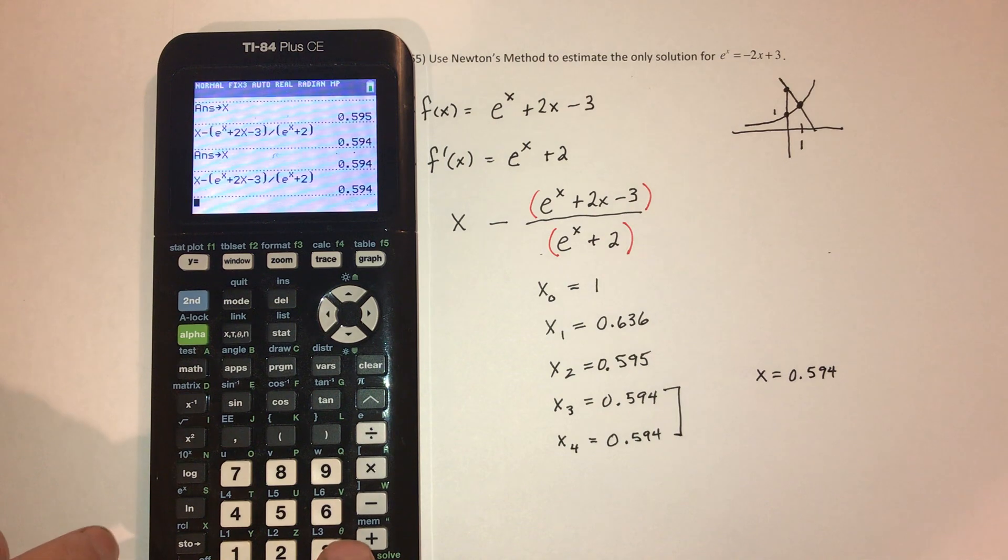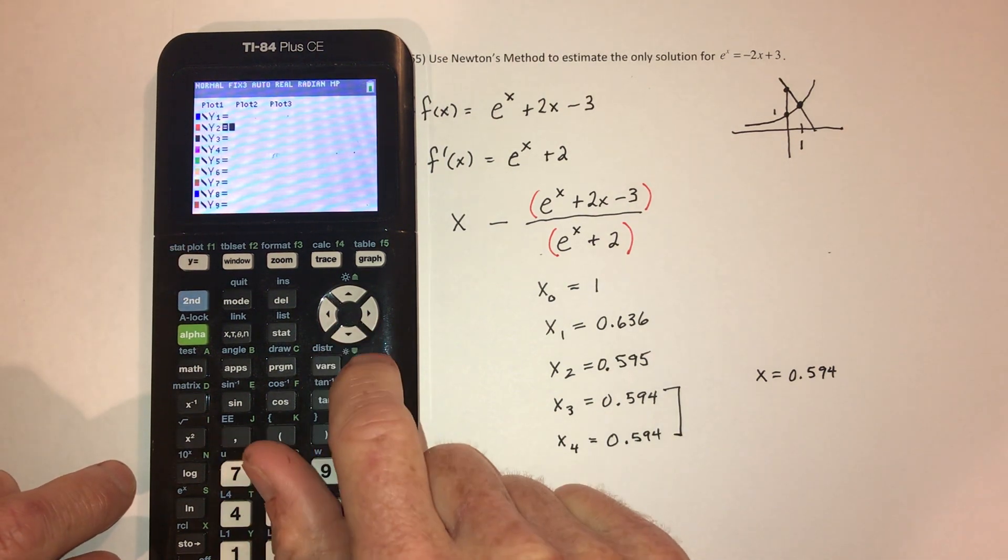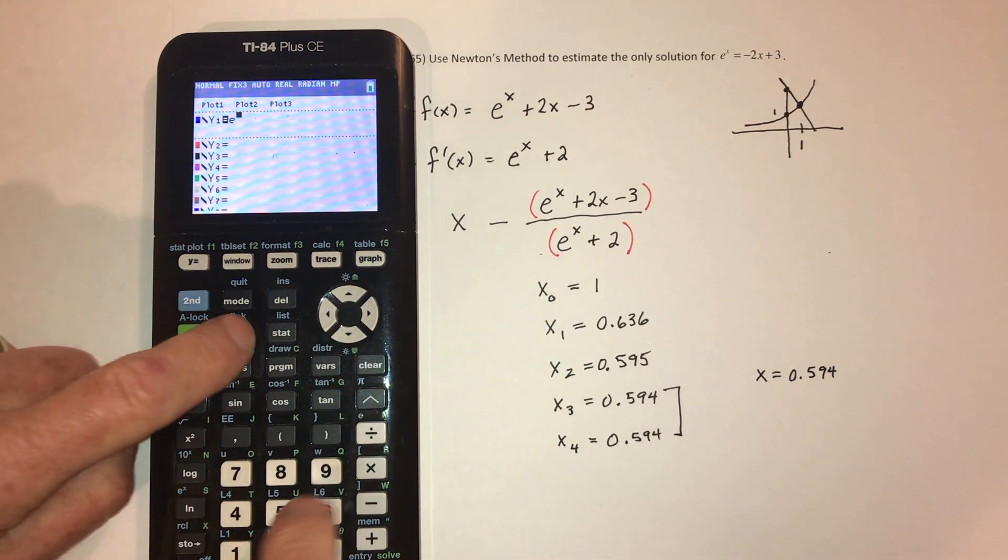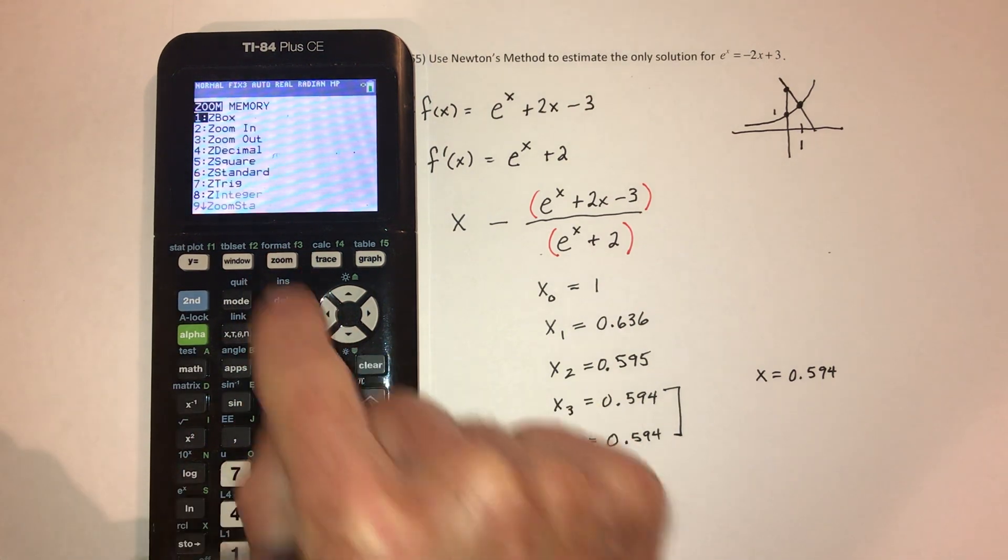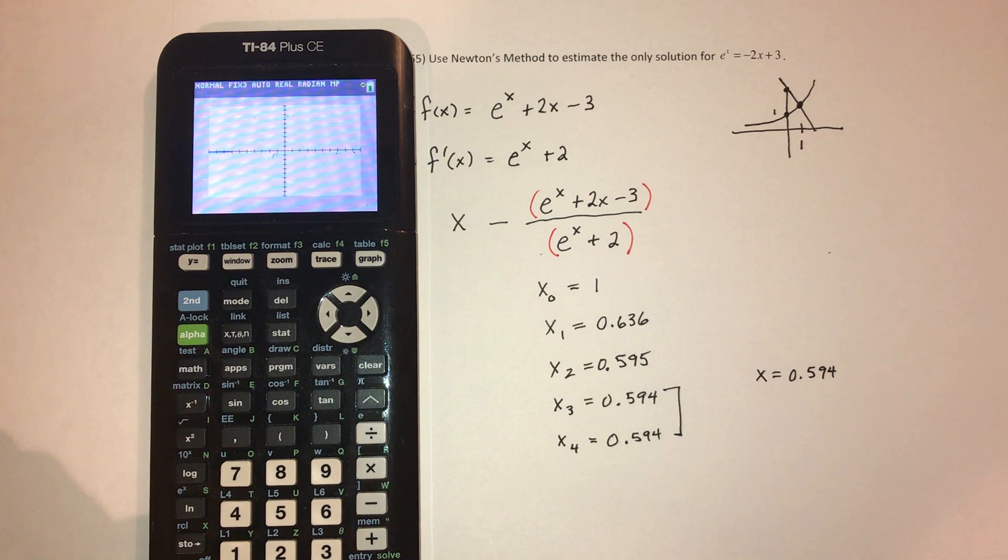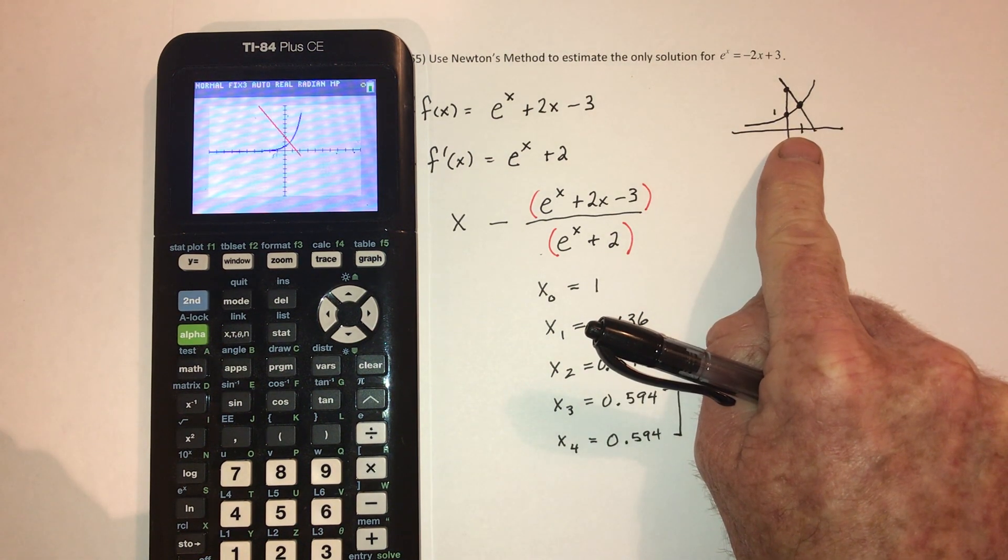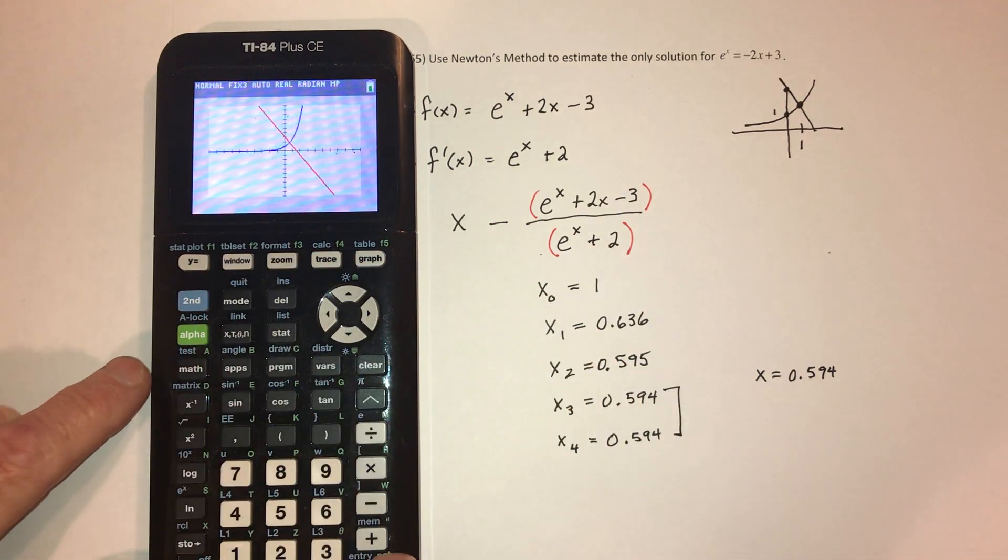And then I want to verify that I got it right. So Newton wasn't able to do this part. He didn't have a graphing calculator. So when did e to the x equal negative 2x plus 3? And you can see it's going to make my little picture right here. Turns out my guess of 1 wasn't too bad.